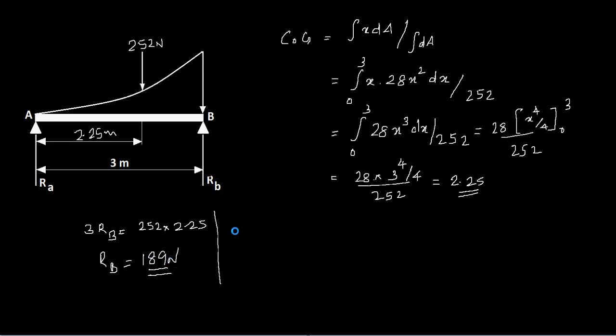Now you have RA + RB = 252, therefore RA = 252 - 189 = 63 Newton.